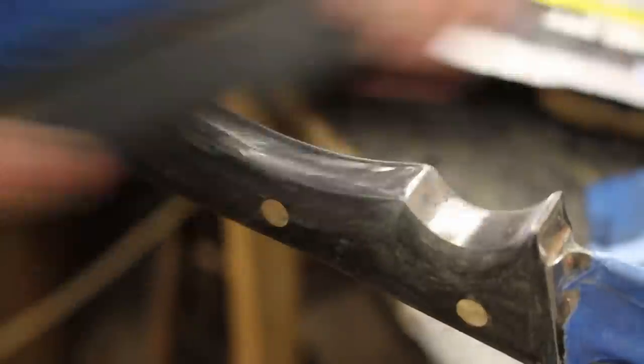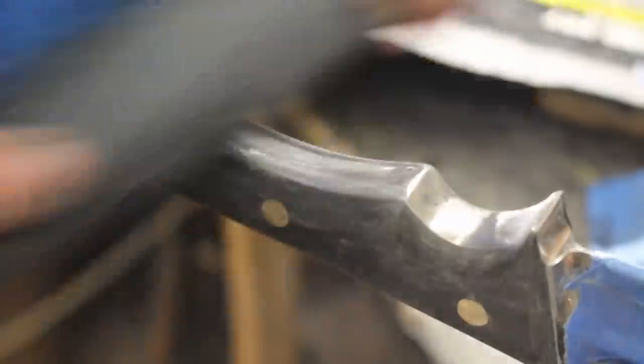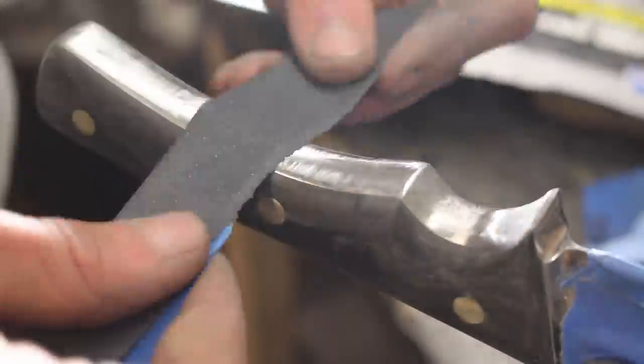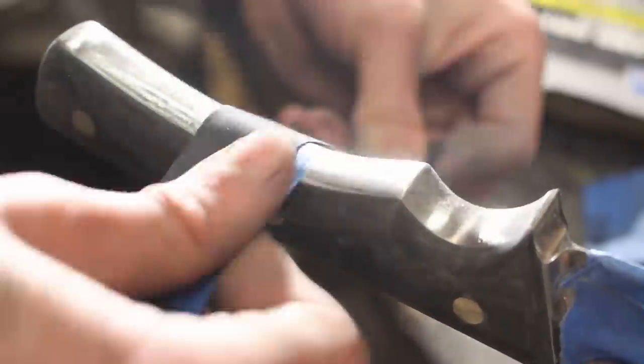After the shaping, it was then time for the sanding. And that was done in the exact same way as the blade. I just started at 240 grit and worked my way progressively all the way up to 2500 grit, just taking my time and making sure to remove any scratches.